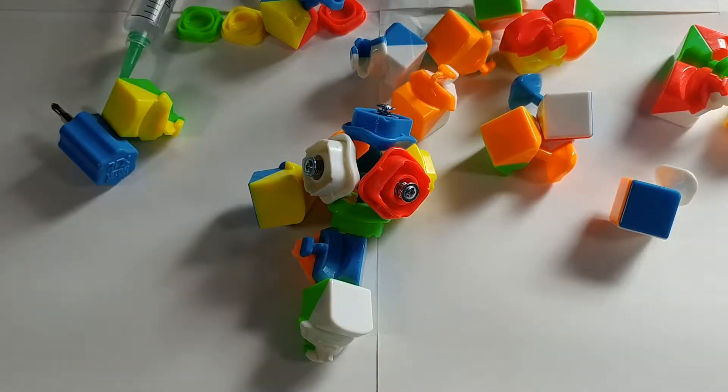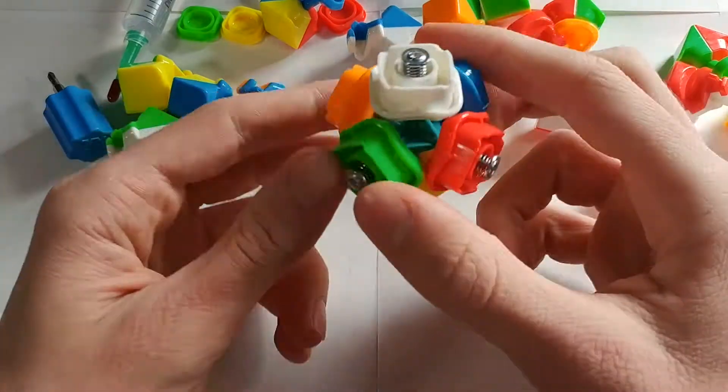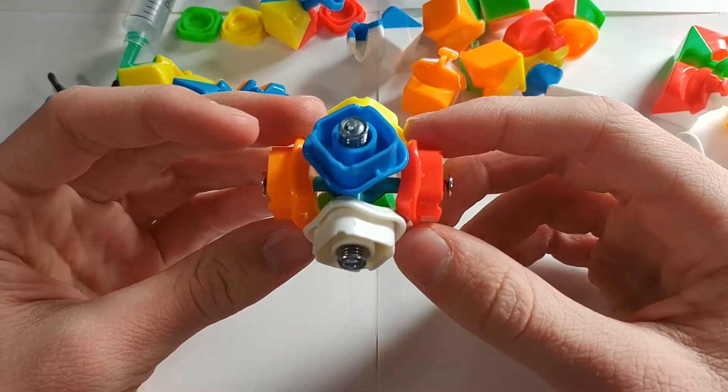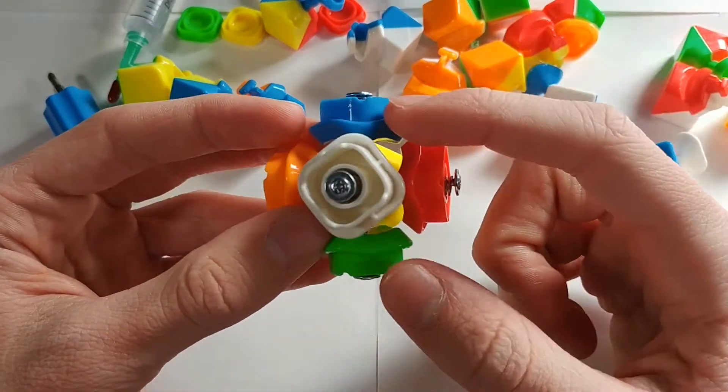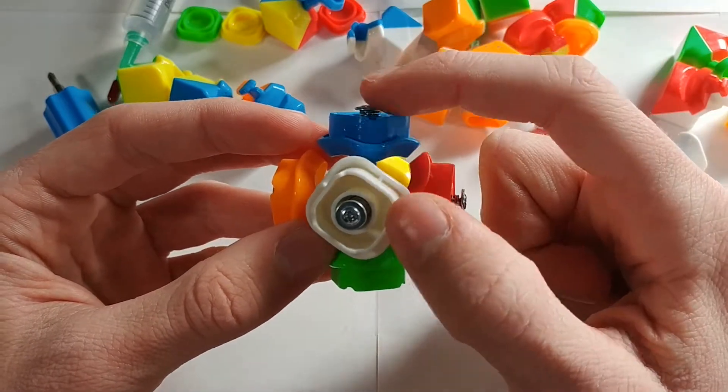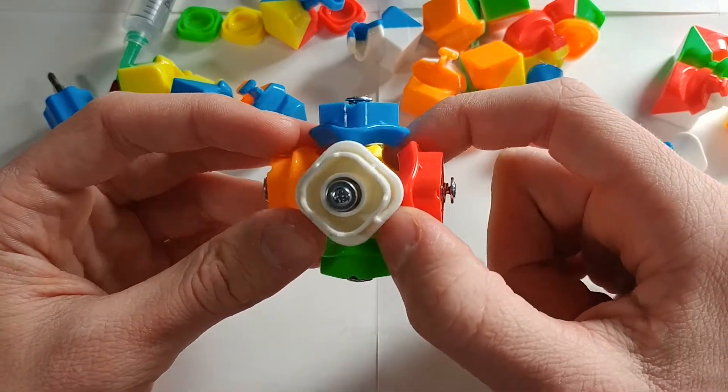So once we've pulled out all of our pieces, your core should look like this. We should have the piece and then we should be able to see the head of the screw protruding out from the center.